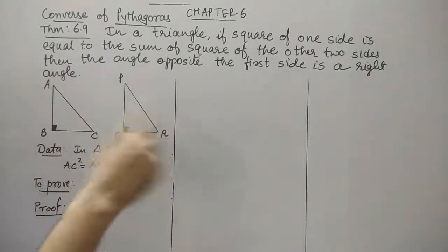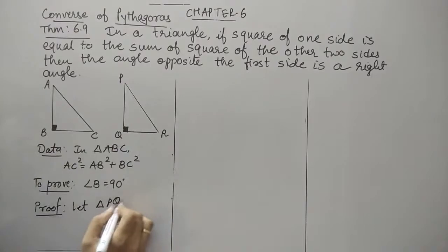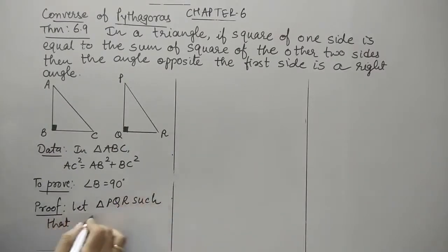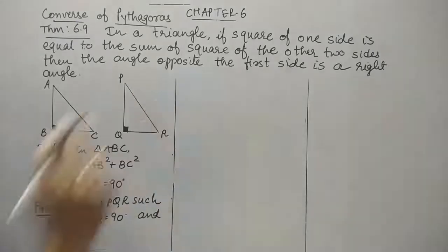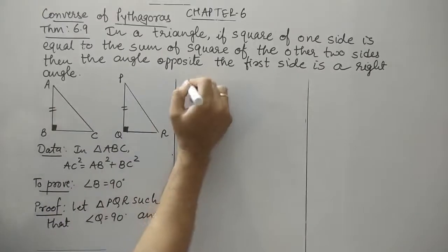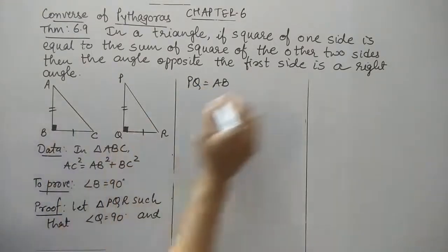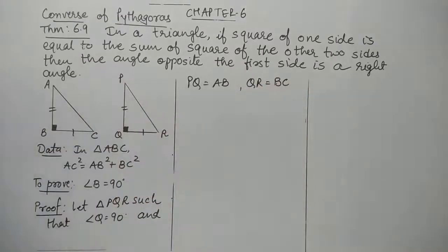Let us start the proof. I have already drawn triangle PQR. Let us construct triangle PQR such that angle Q is a right angle, PQ = AB, and QR = BC. This is what we are going to use later on.